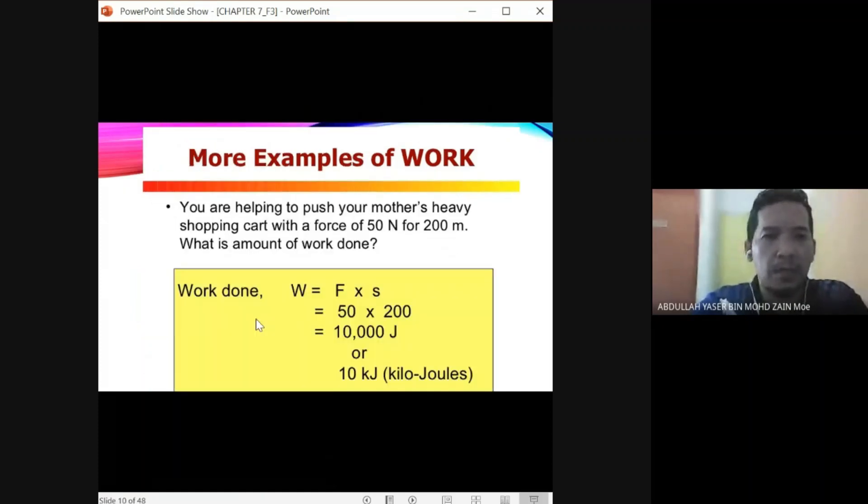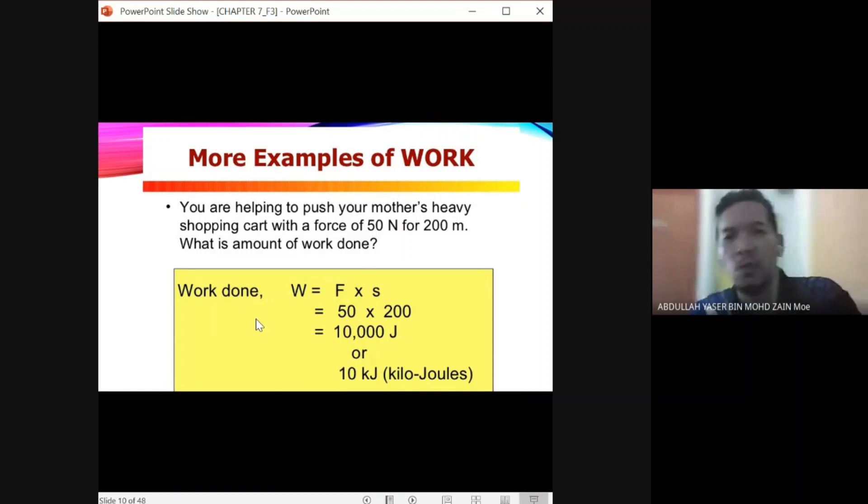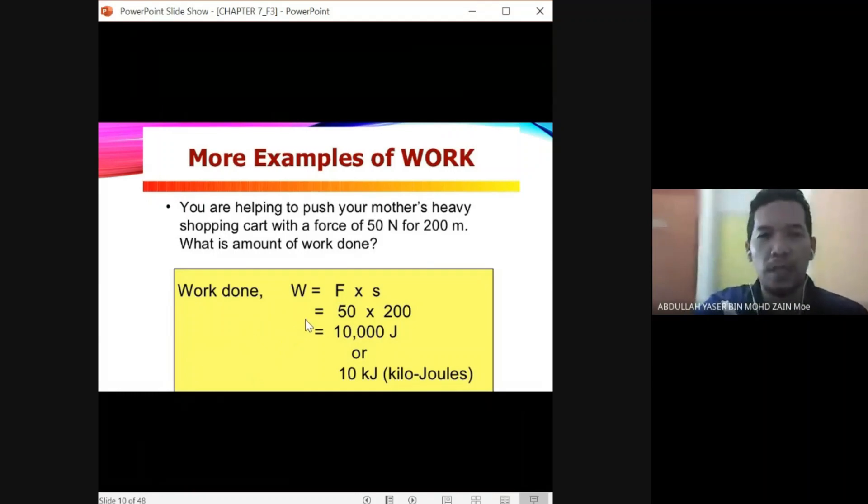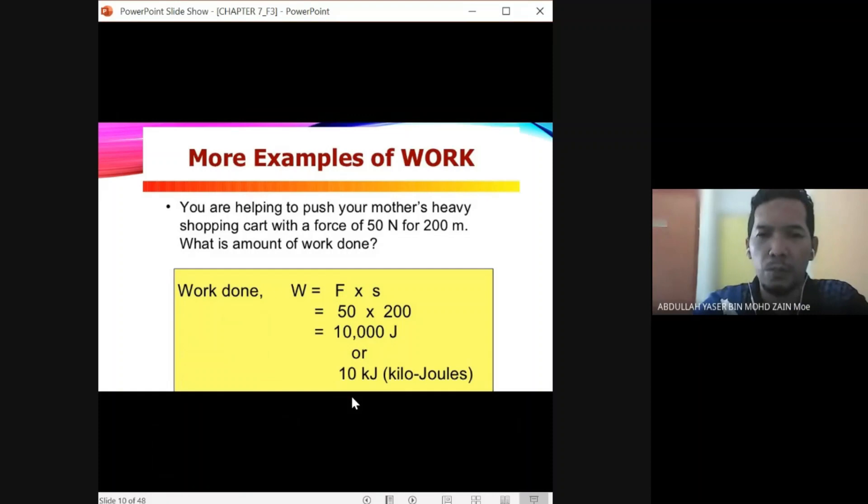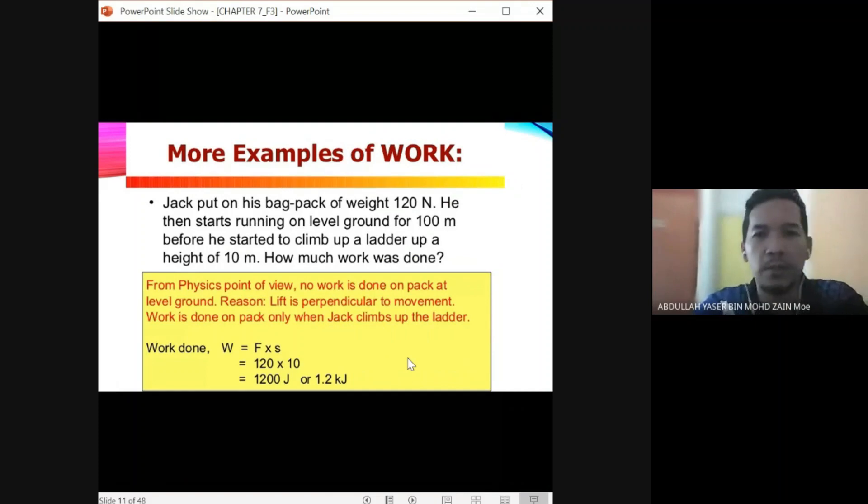You are helping to push your mother's heavy shopping cart with a force of 50 newtons for 200 meters. What is the amount of work done? How to calculate work done is W equals F times S. The force is 50 newtons and the distance is 200 meters. So 50 newtons times 200, we will get 10,000 joules, or we can change to kilojoules, so you will get 10 kilojoules. Let's see another example of work done.